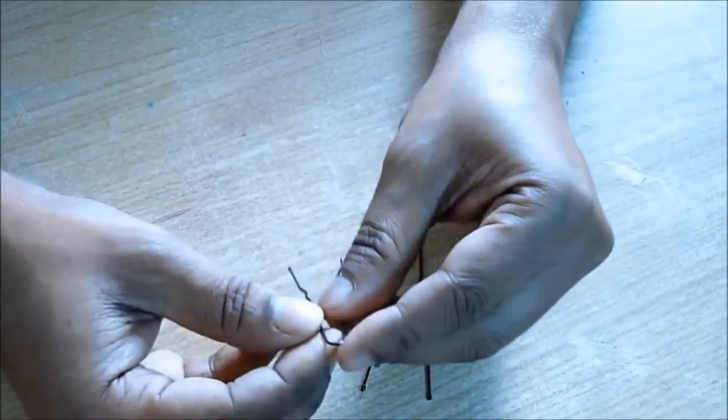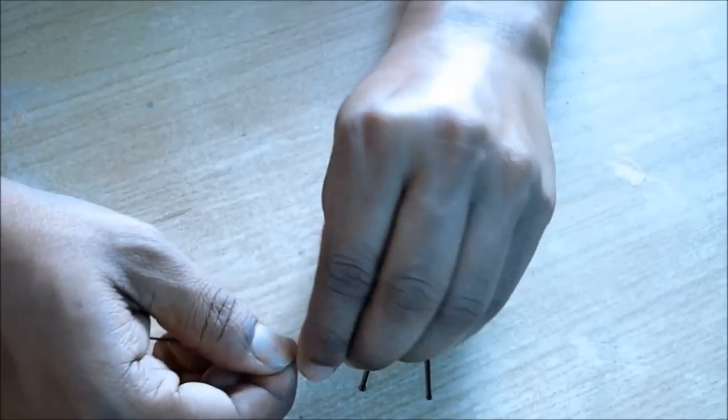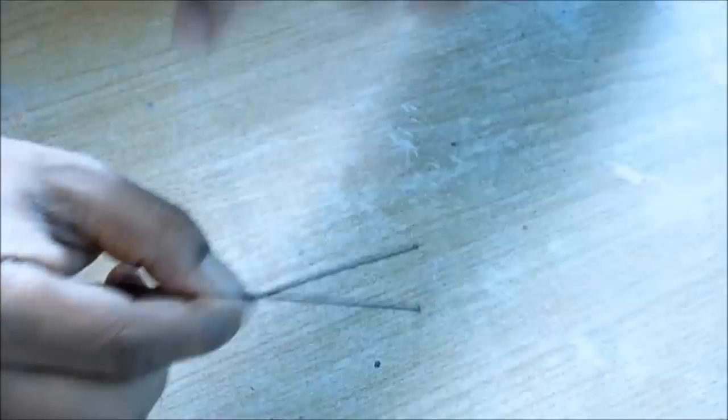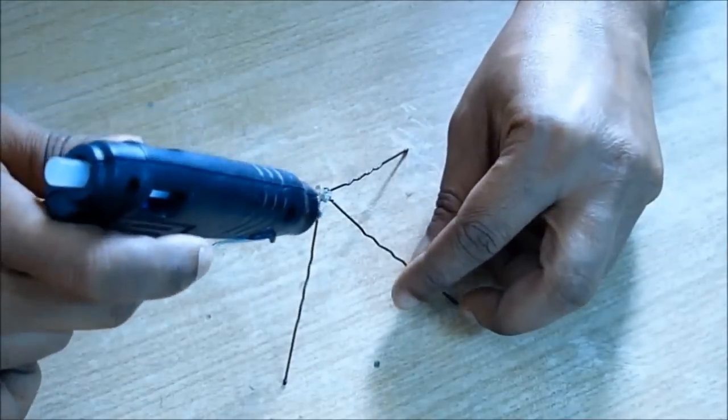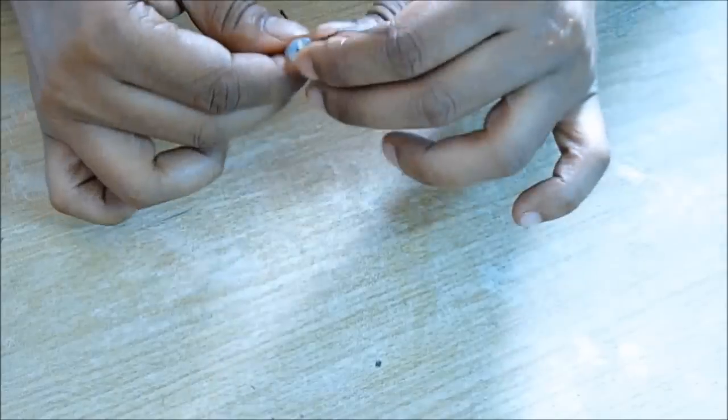For this you need two hairpins like this, open them and tie them together at the center with a wire so that they are crisscrossed in position, glue them and then twist both the sides.